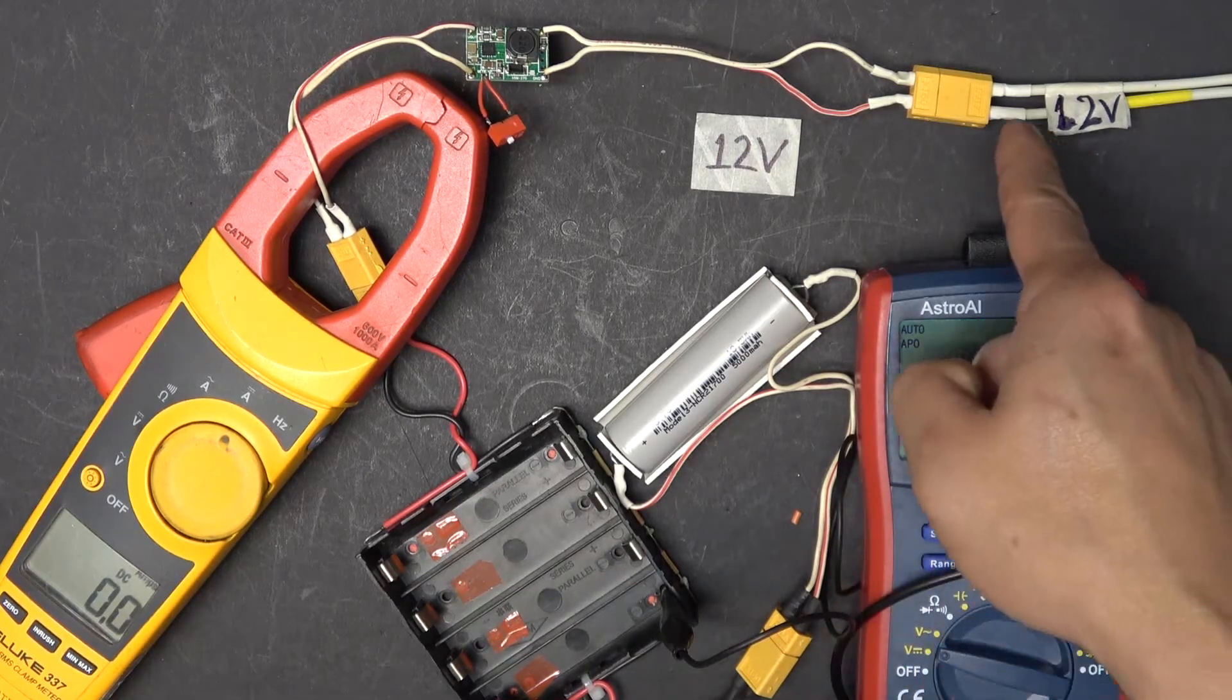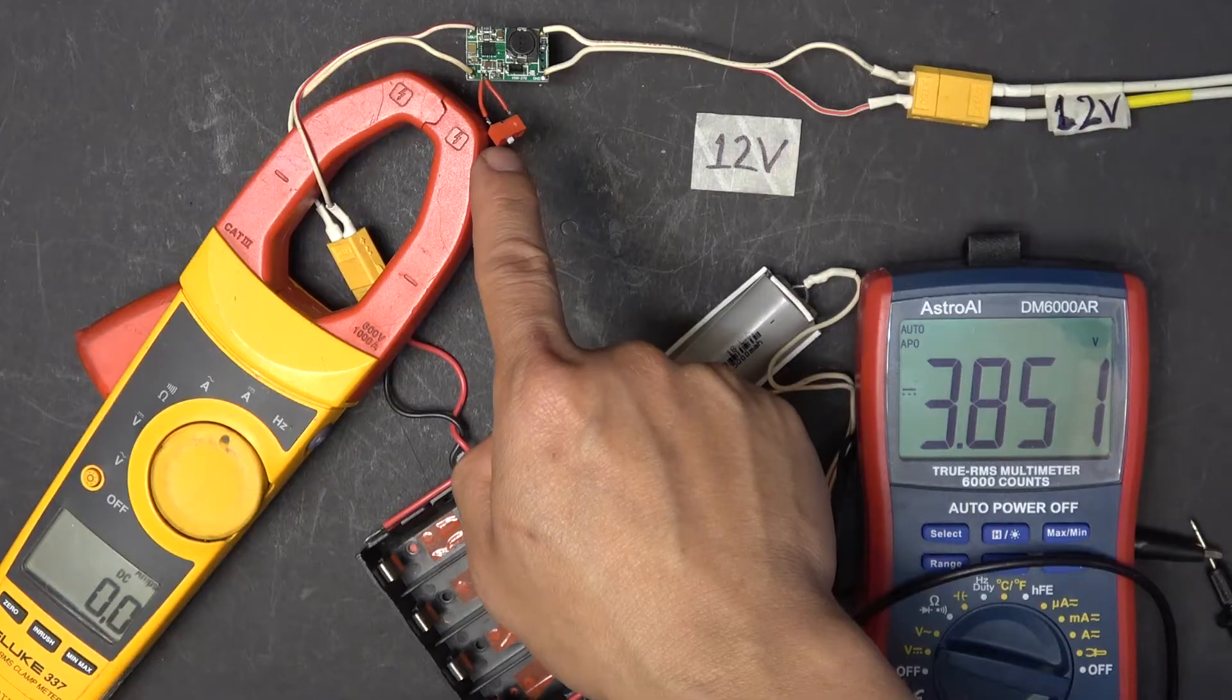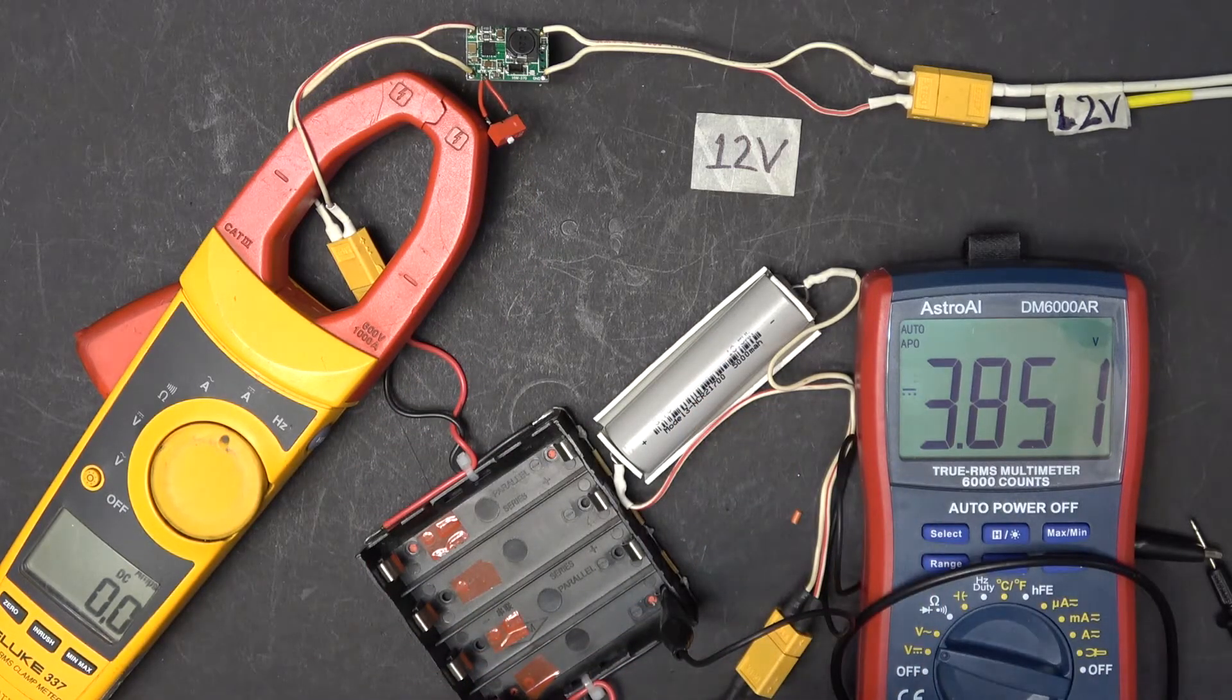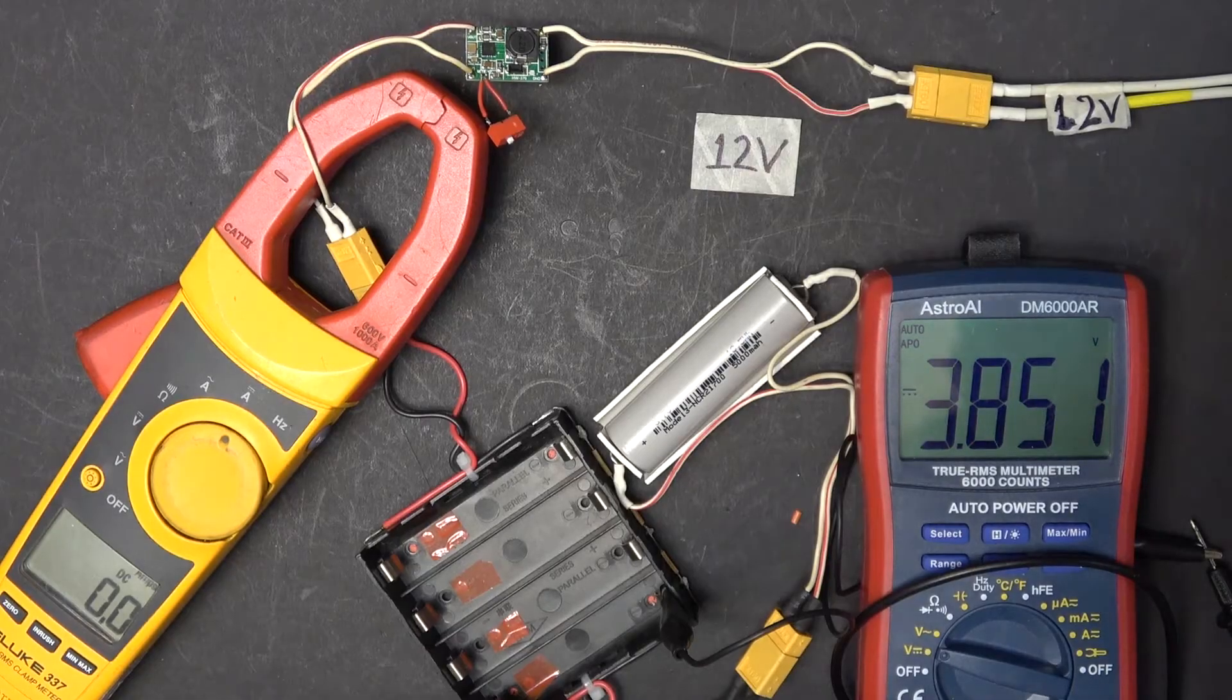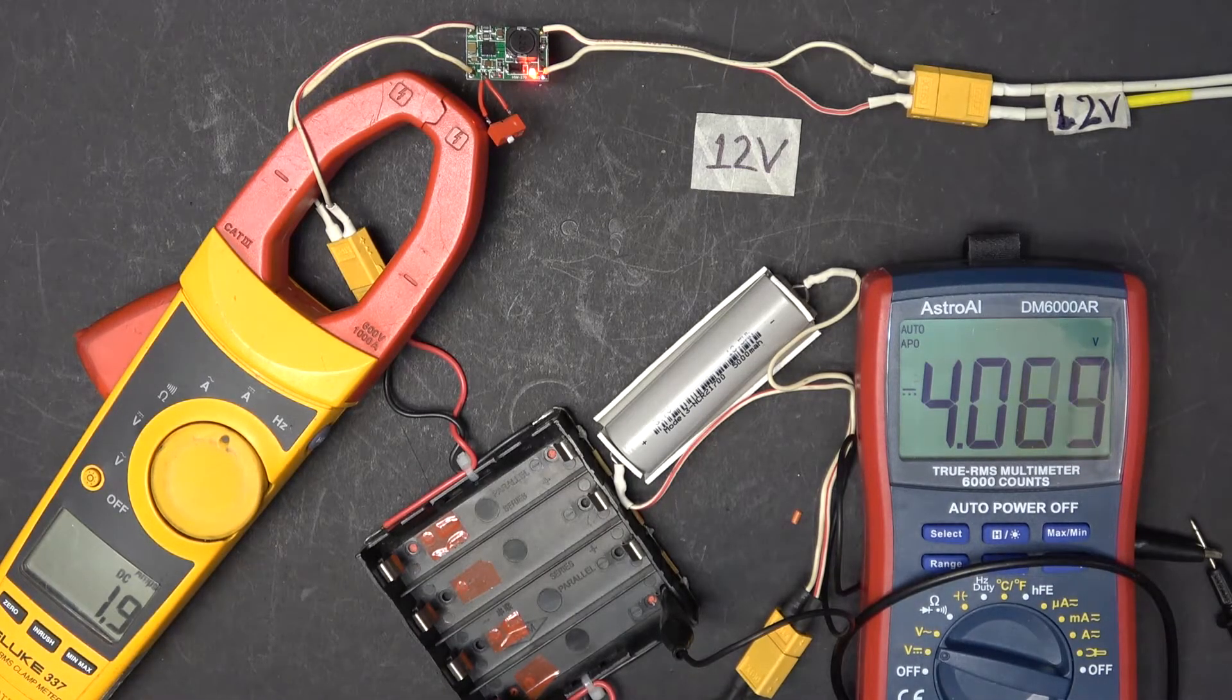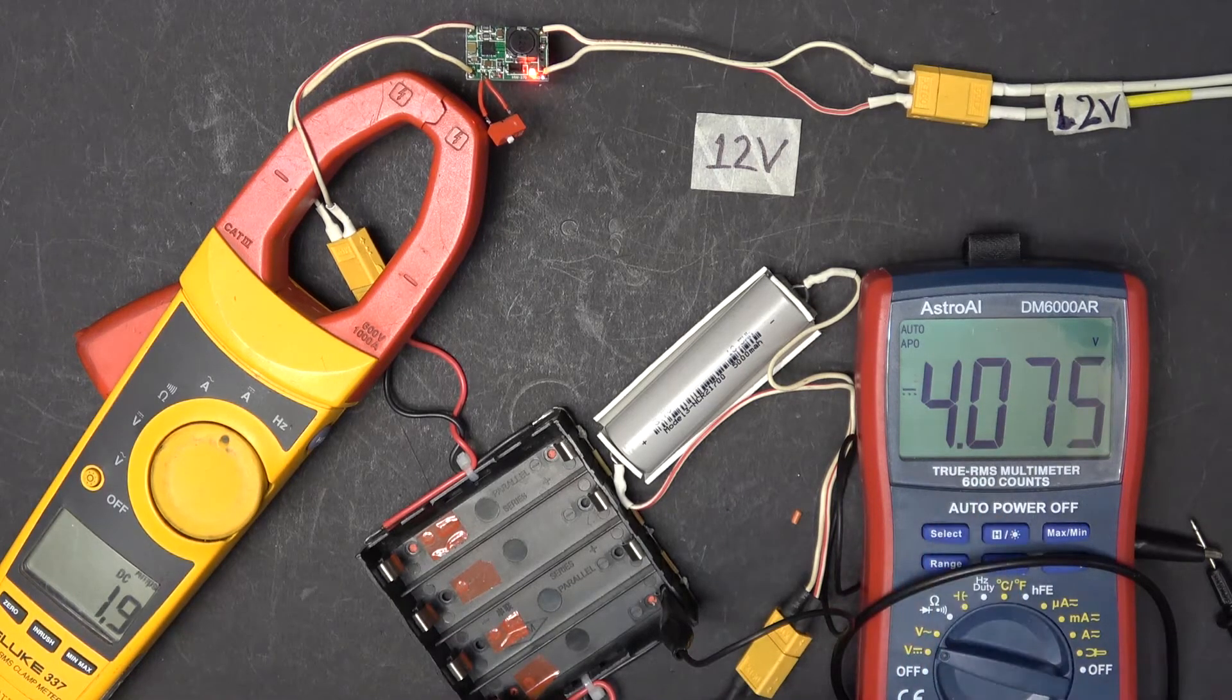Next test. I've got a 12 volt power supply coming in. The selector switch is off for single cell charging. Battery is at 3.8 volts. Let's turn on the power supply. Charging at 2 amps at 4 volts.